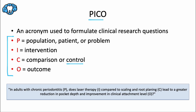And O is the outcome — the desired effect from the intervention, which could be a clinical outcome, a patient-reported outcome, or a health-related outcome. For example: in adults with chronic periodontitis, does laser therapy compared to scaling and root planing lead to a greater reduction in pocket depth and improvement in clinical attachment level? Here, P is adults with chronic periodontitis, I is laser therapy, C is scaling and root planing, and O is reduction in pocket depth and improvement in clinical attachment level. This PICO question is clear, specific, and covers all four areas, guiding the researcher to focus on a well-defined clinical question.